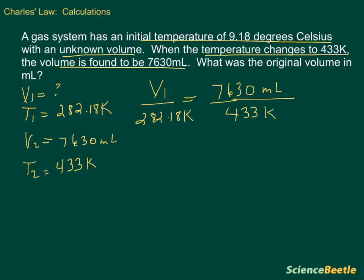What we want to do here is we just want to divide the right side, and then we're going to deal with the left. We're going to get V1 divided by 282.18 Kelvin on the left-hand side. And this is going to be equal to whatever we get when we divide 7630 by 433. And that answer is actually equal to 17.62, and this is going to be milliliters per Kelvin.